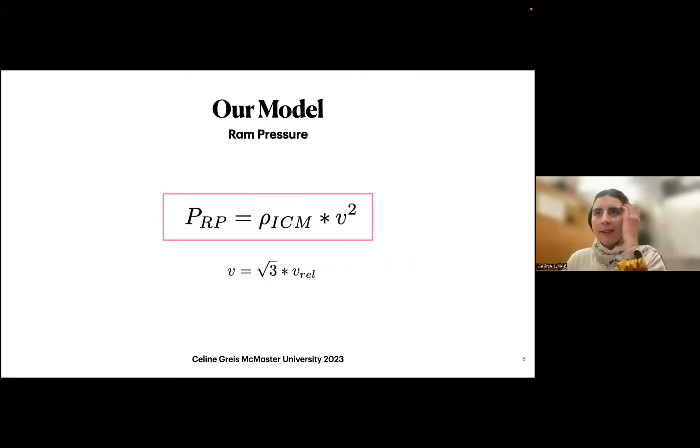The ram pressure formula looks simple, it's just the density of the intercluster medium and the velocity the galaxy moves within it. But the issue is that to get the density, you need the distance from the galaxy to the center of the cluster, and as my supervisor Chris Wilson always says, distances are hard. We have to use the projected distance, and we do kind of a pi over 2 factor to take into account that we don't have the information about the third dimension. The same thing goes for the velocity, we just have the radial velocity, so we assume it's isotropic, it moves in all directions, that's why the factor of root 3.